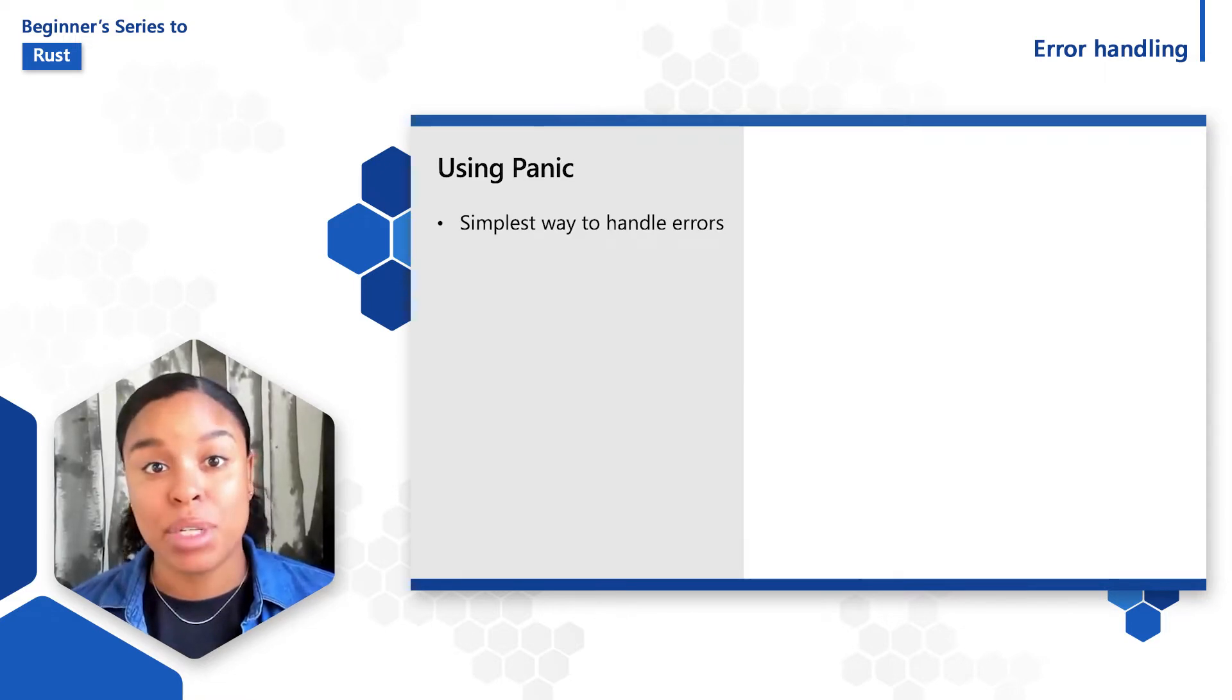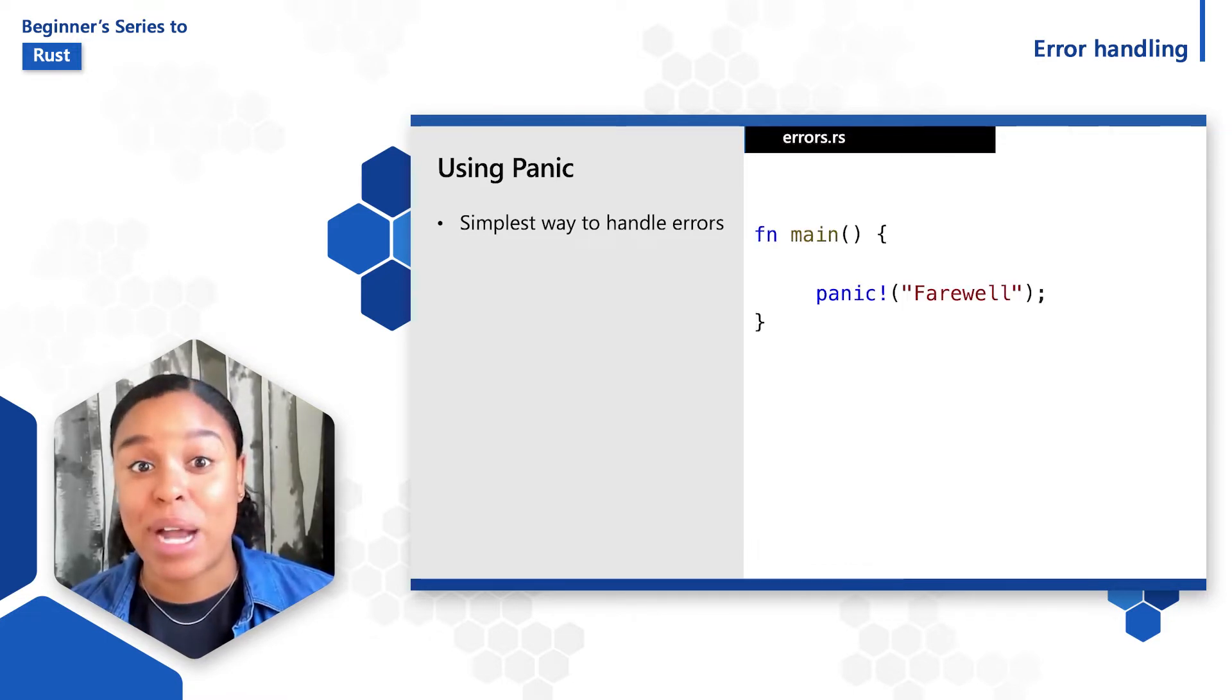Panicking is the simplest way to handle errors in Rust. You can use the panic macro to quit the program execution. Using a panic macro would look like this. Wherever we want inside of the main function, we can include the panic macro along with a message to print out when the program stops executing.